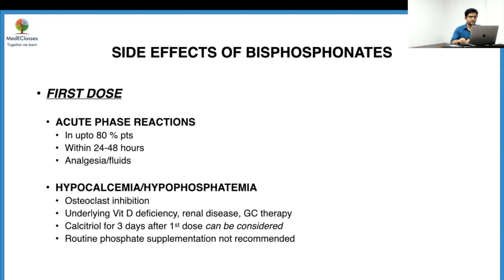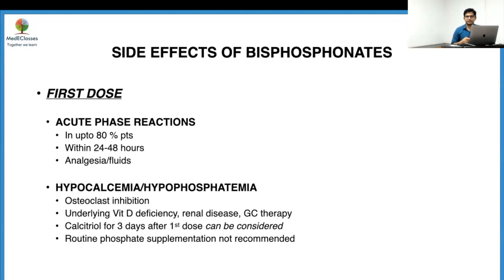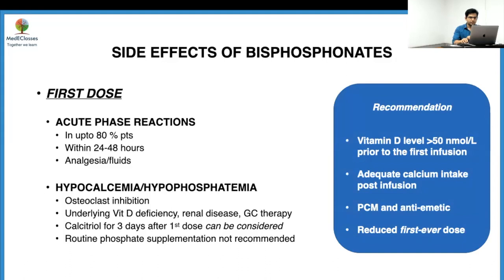Regarding side effects: after the first dose, up to 80% of patients can develop fever, myalgia, and lethargy, easily managed with analgesia and fluids, usually resolving within 24 to 48 hours. Hypocalcemia and hypophosphatemia may occur due to osteoclast inhibition, or due to underlying vitamin D deficiency, renal disease, or ongoing glucocorticoid therapy. A trial of calcitriol for three days may be given after the first dose in patients with hypocalcemia. There is no routine recommendation for phosphate supplementation. Vitamin D levels should be maintained above 50 nmol/L prior to the first infusion, with adequate calcium intake and post-infusion paracetamol and antiemetic. The first dose should be a lesser dose than subsequent doses.